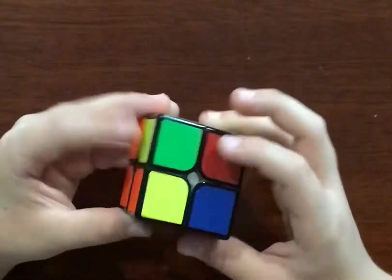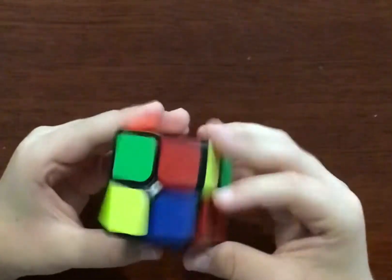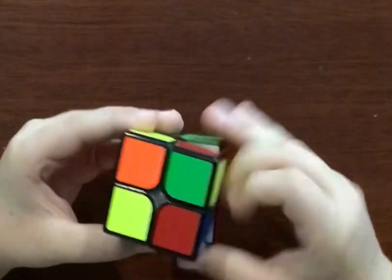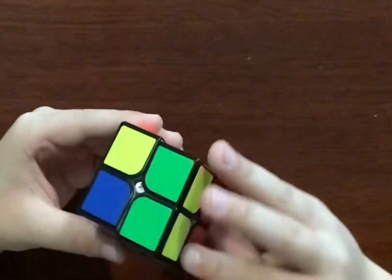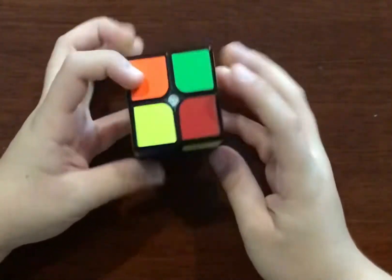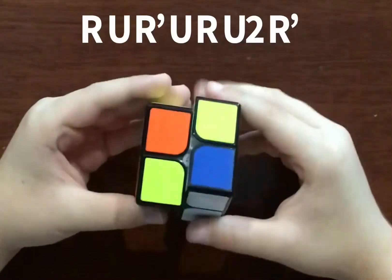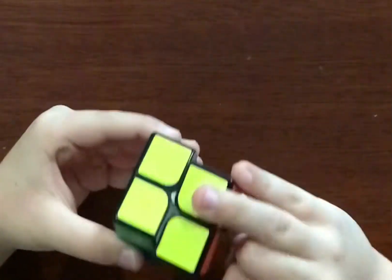You might have a case where there's one dot and it's facing towards you. So this is what you do: you do R, U, R prime, U, R, U2, R prime.